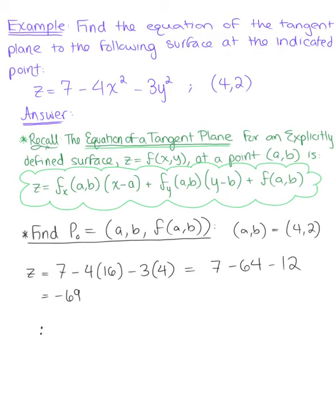Therefore, we can say P₀, which is defined by the components (a, b, f(a,b)), equals (4, 2, -69).